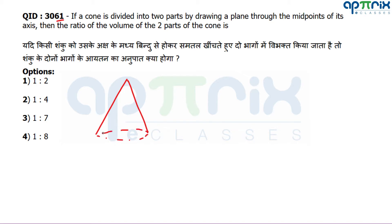The cone is divided from the midpoint. If we draw a two-dimensional projection, it becomes a triangle with a line at the midpoint. The two resulting triangles — the small triangle and the big triangle — are similar triangles. The volume of a cone is (1/3)πr²h.